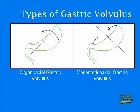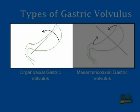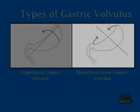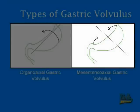The pre-procedural fatality rate of volvulus is 50-80%, while the post-procedural fatality rate is 0-20%. There are actually two main types of gastric volvulus: organoaxial gastric volvulus and mesentericoaxial gastric volvulus.